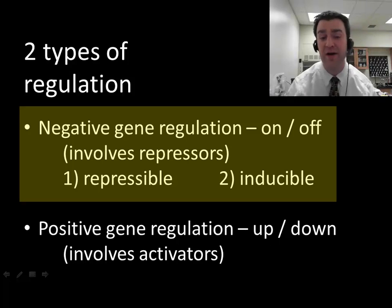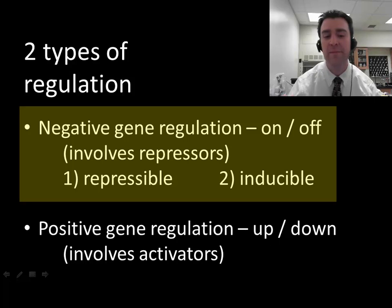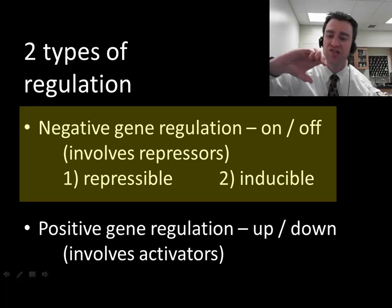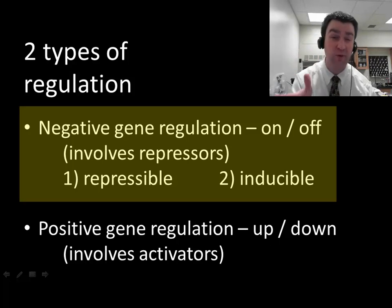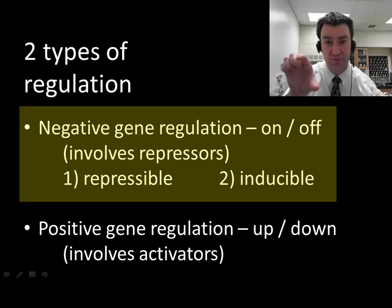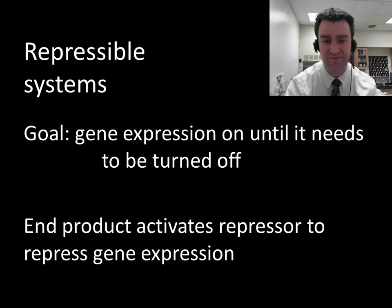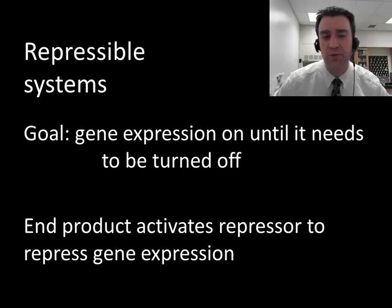As a preview, positive gene regulation assumes gene expression is already on, perhaps. Positive gene regulation is more about how much transcription we want to take place. We can turn gene transcription up if we want to really prioritize making a certain mRNA or protein, or we could also turn expression down. That's going to involve activator type transcription factors. So let's start with negative gene regulation and with repressible type expression regulation.